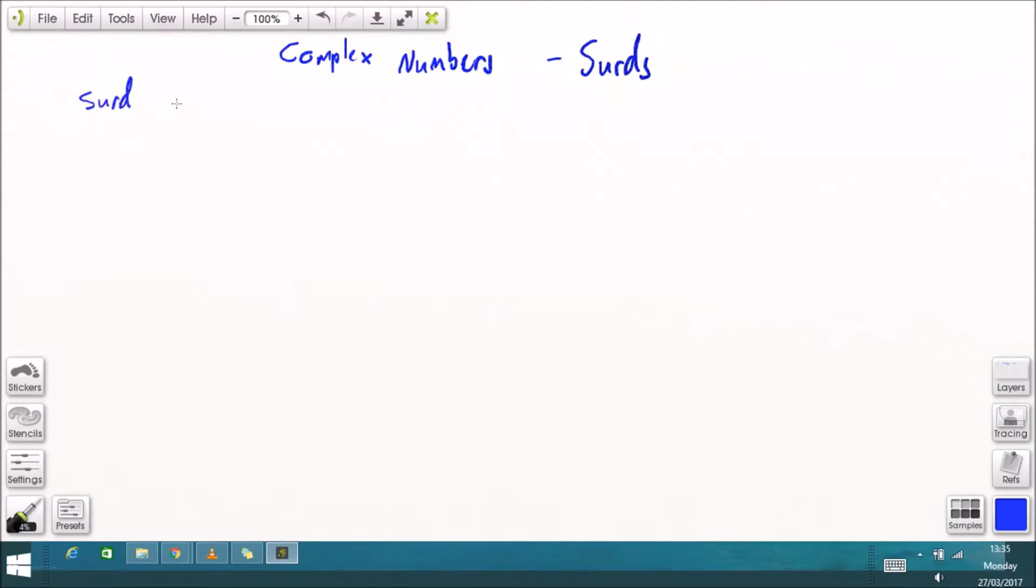In this video we're going to be looking at surds, simplifying surds and using conjugates. Now a surd is a number like the square root of three which is only written as square root of three.